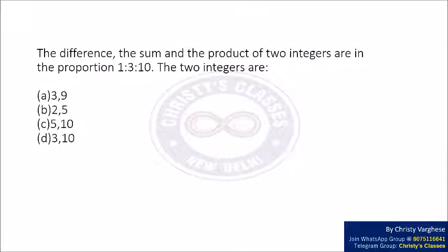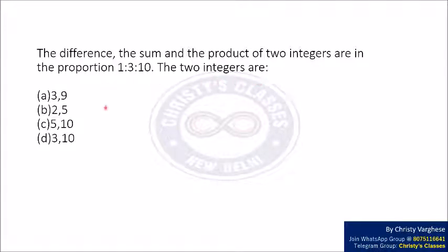In this video, we are going to solve the question: the difference, the sum, and the product of two integers are in a proportion 1 is to 3 is to 10. The two integers are — we are given four options and we are going to find the two integers.